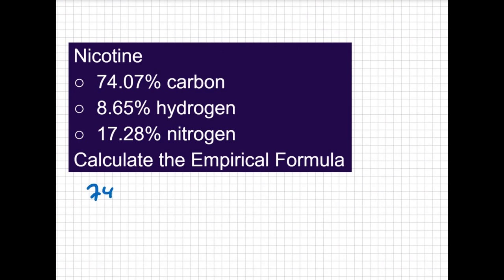So I have 74.07 grams of carbon, 8.65 grams of hydrogen, 17.28 grams of nitrogen, and I'm going to leave hydrogen and nitrogen just as H and N. We're just looking at the atoms. We're not talking about the diatomics.